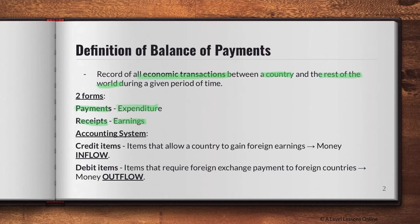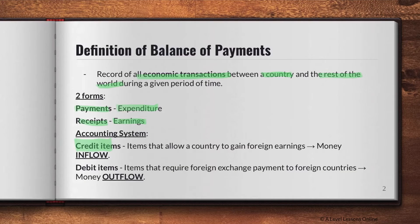Receipts — think of it like when you pay for something and the cashier gives you a receipt, meaning it's yours and has entered into your possession. When your country makes money, that is known as a receipt — it's coming into your economy. In accounting terms, these are also known as credit and debit items. Credit items allow a country to gain foreign earnings, representing money inflow into your country.